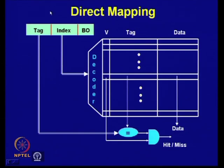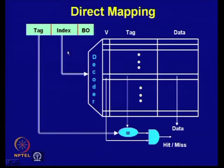Let us quickly recapitulate direct mapping. In case of direct mapping, the address coming from the processor is divided into three fields. The first field is known as block offset or byte offset — it essentially represents the number of bytes present in a block. The second field is the index field, which in direct mapping points to a particular cache line and checks whether that line corresponds to the address being generated by the processor.